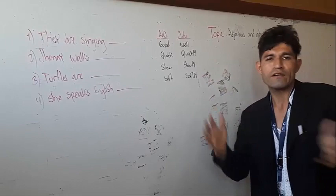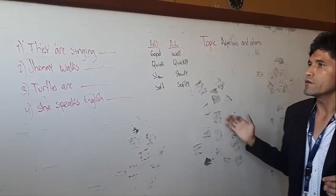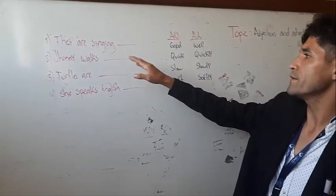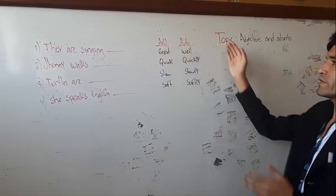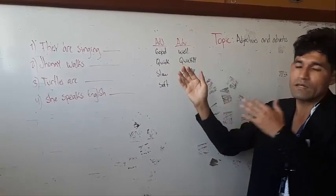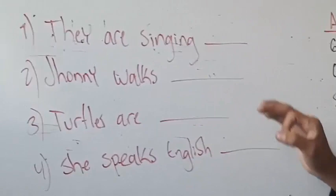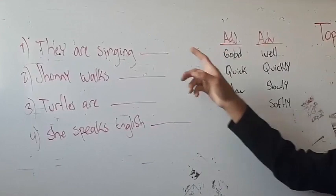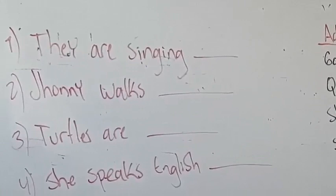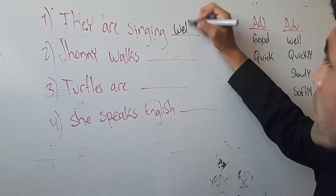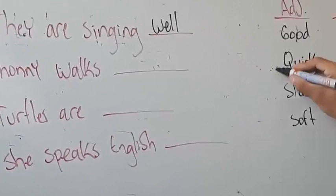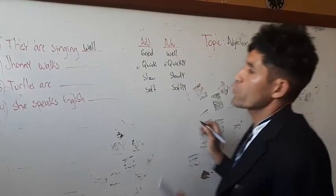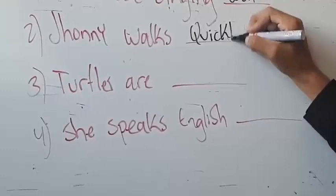In order to finish the video, we have some examples to clarify the class that we are learning together. We have a sentence and we need to choose between the adjective and the adverb. For example, in the first one: 'They are singing' — we need to select 'good' or 'well.' In this case, they are singing well. Next: 'Johnny walks quick or quickly.' In this case, Johnny walks quickly.